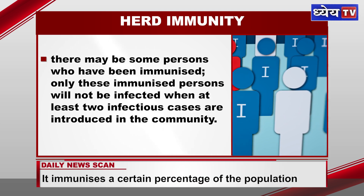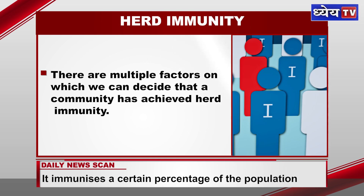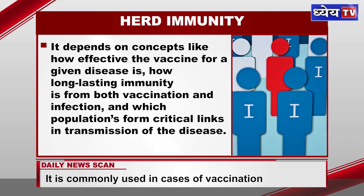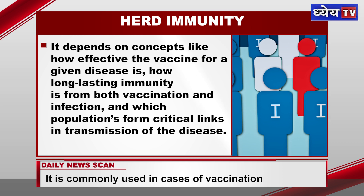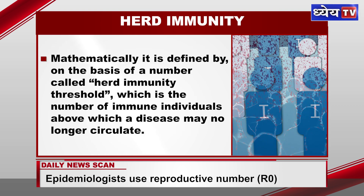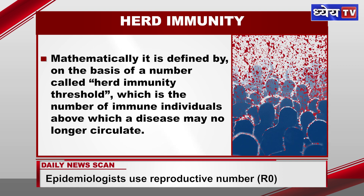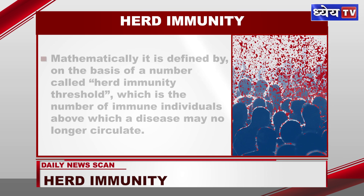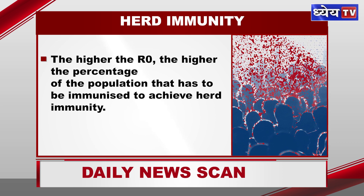There are multiple factors that determine whether a community has achieved herd immunity. These include how effective the vaccine for a given disease is, how long-lasting immunity is from both vaccination and natural infection, and which populations form critical links in transmission. Mathematically, it is defined by the herd immunity threshold — the number of immune individuals above which a disease may no longer circulate. The higher the R0, the higher the percentage of the population that must be immunized to achieve herd immunity.